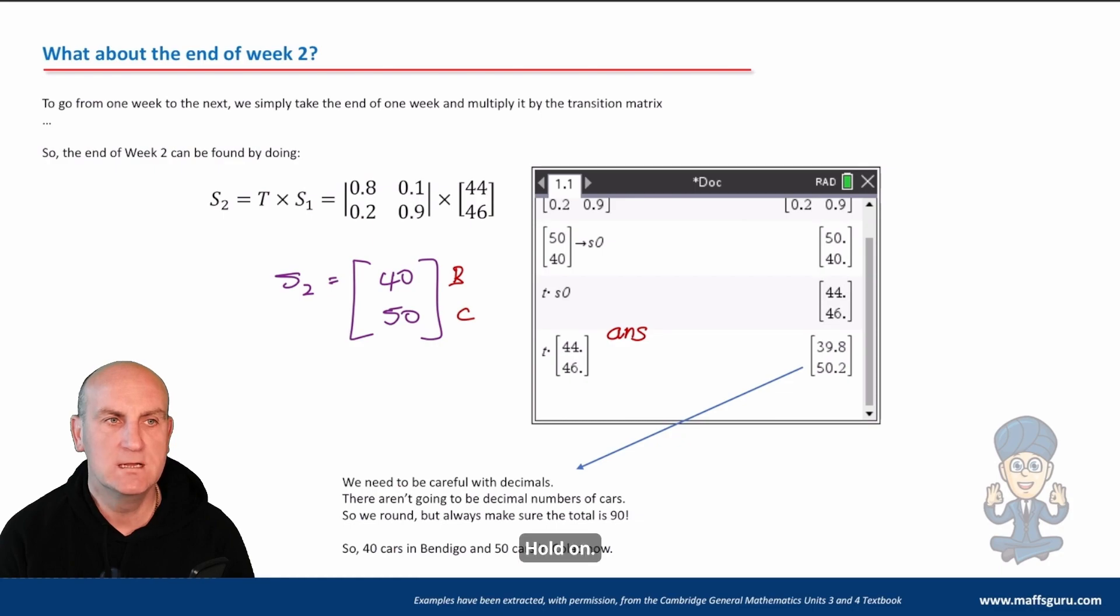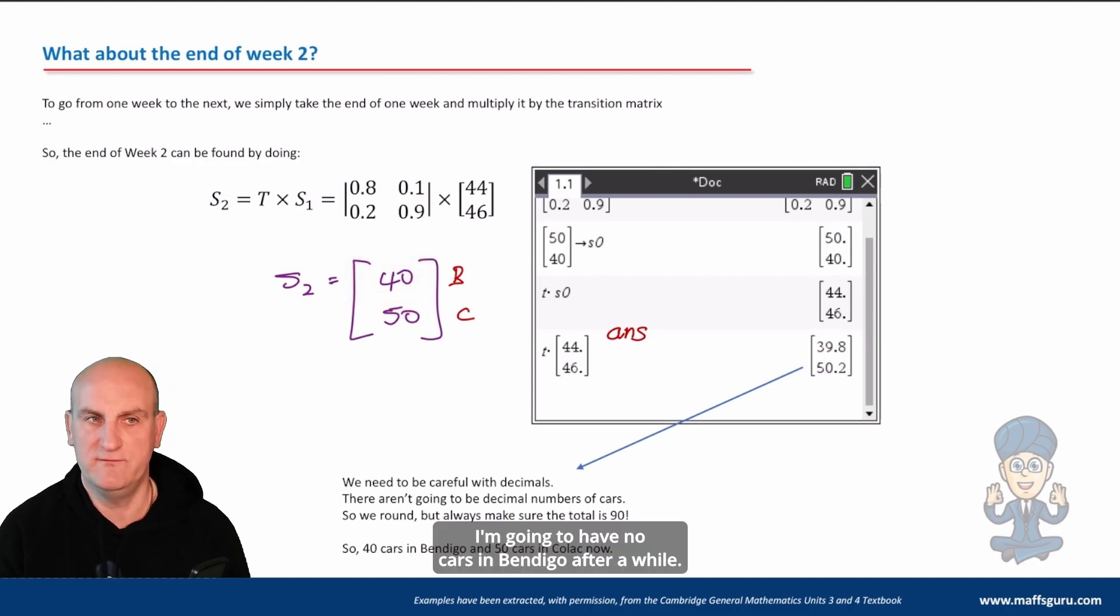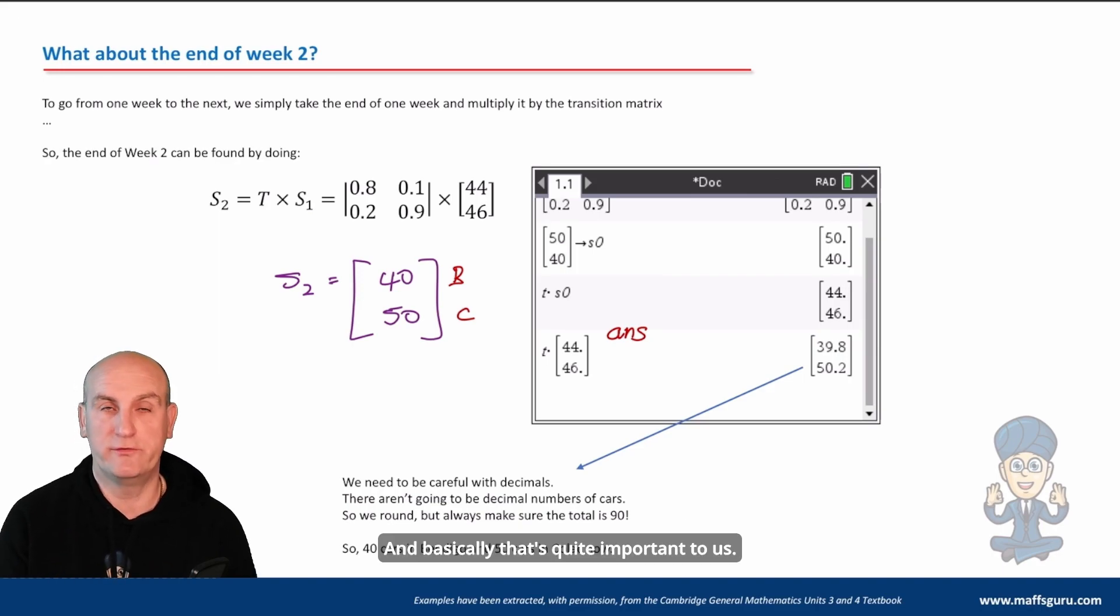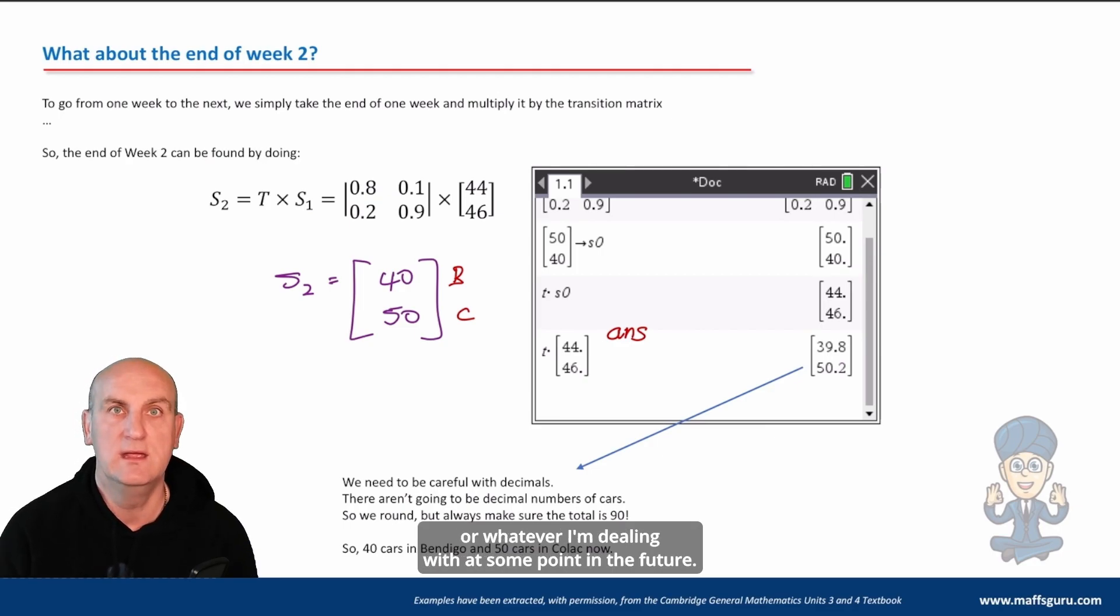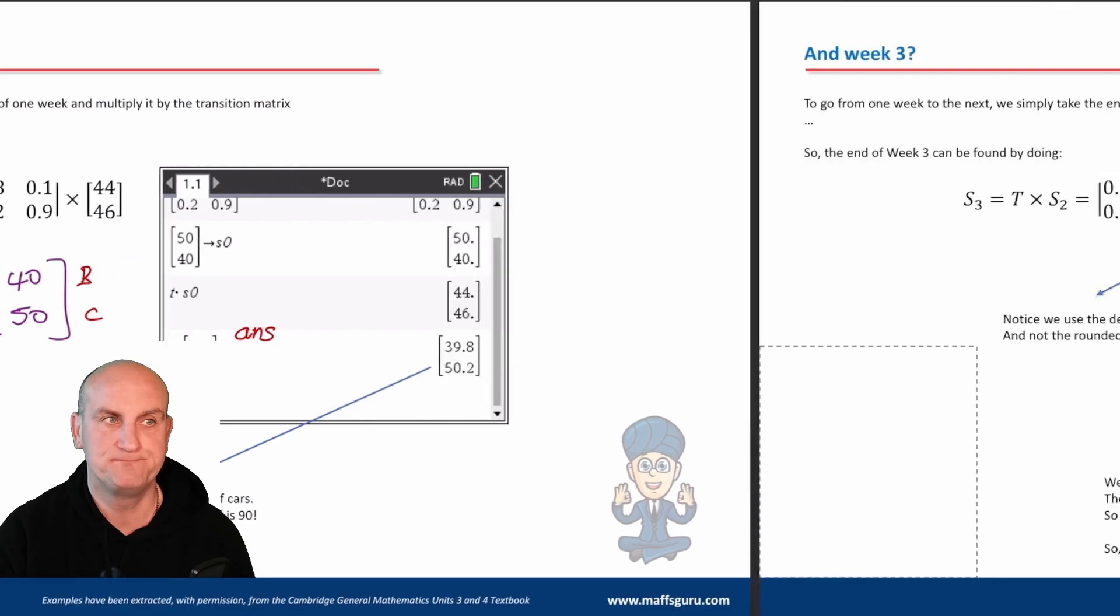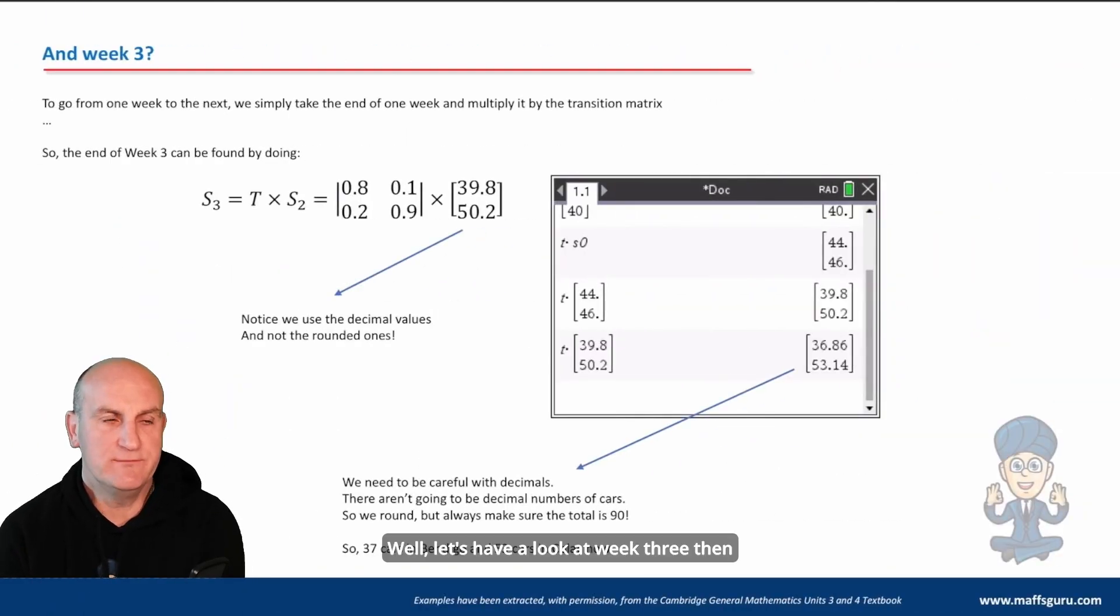Hold on, I've now lost 10 cars from Bendigo. I started with 50 cars, didn't I, and 40, and it's now gone 40 and 50. It's swapped. I've lost 10 cars here. If this keeps going, I'm gonna have no cars in Bendigo after a while. And basically that's quite important to us. We want to know what's gonna happen to all of my cars or whatever I'm dealing with at some point in the future. Well, let's have a look at week three then and see whether it changes.